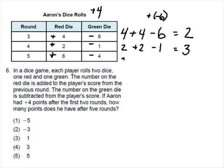Finally, in round five, he gains six points, and then loses four of them. Three plus six is nine, minus four is five. So he finishes off the five rounds with a positive five points.